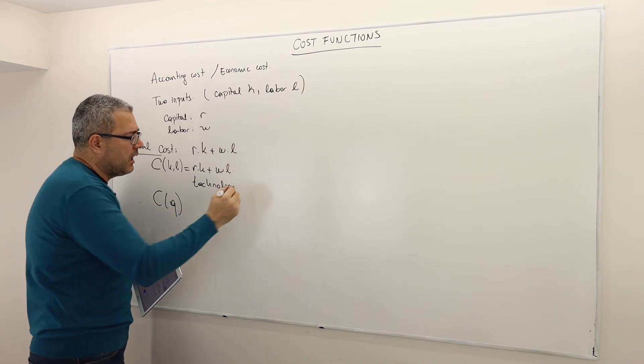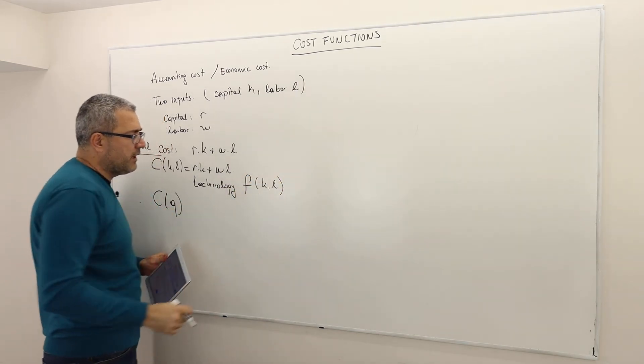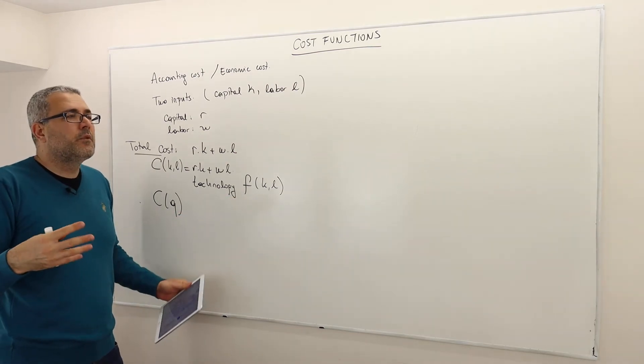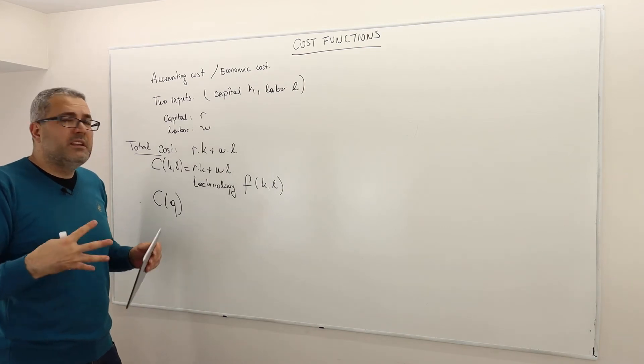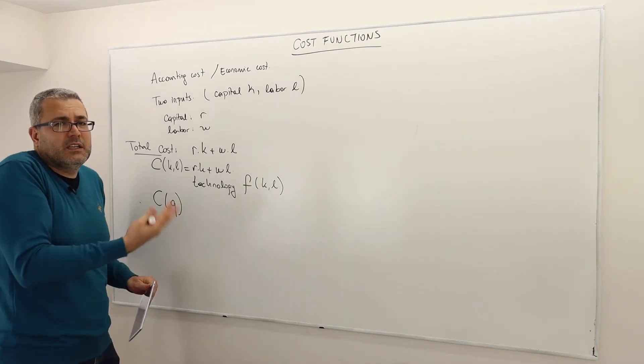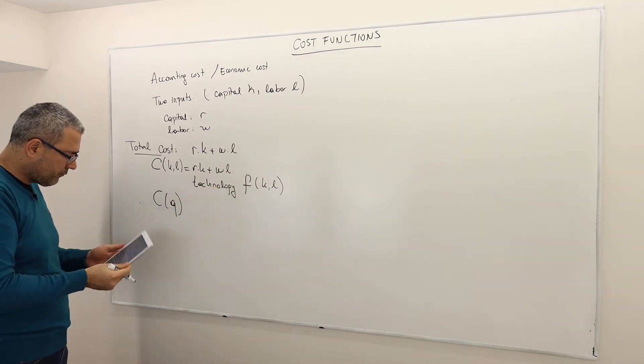So what is the technology? Technology is basically the production function. Yes, you have some capital, you have some labor, but when you bring this capital and labor, it creates a synergy. And so the synergy is called technology, or production function.